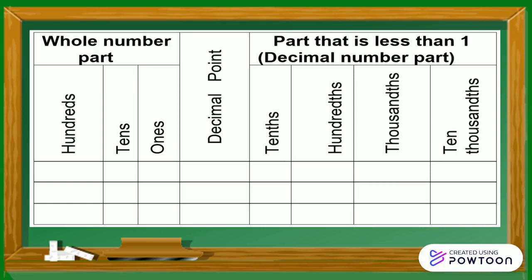Let us proceed with the next decimal number. 0 is in the ones place value in the whole number part, 9 is in the tenths place value, and 2 is in the hundredths place value in the decimal number part.